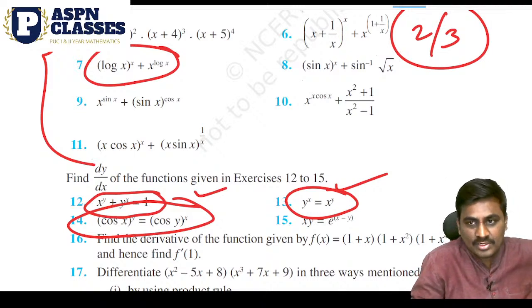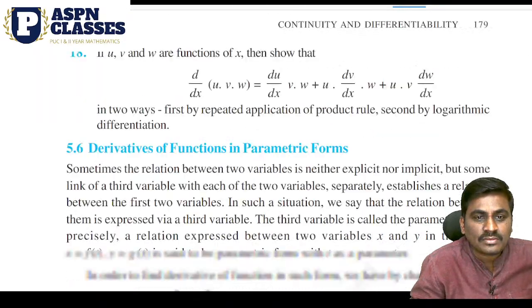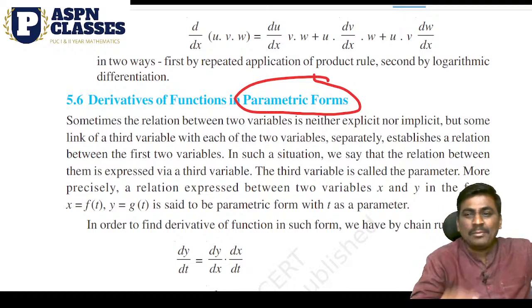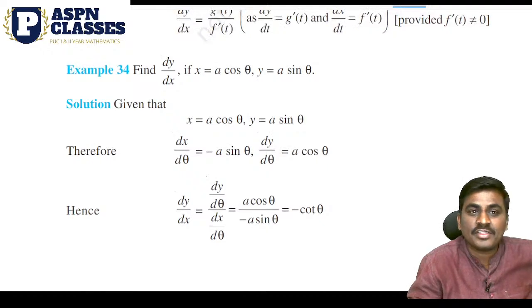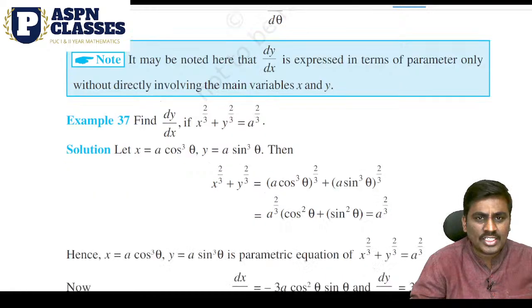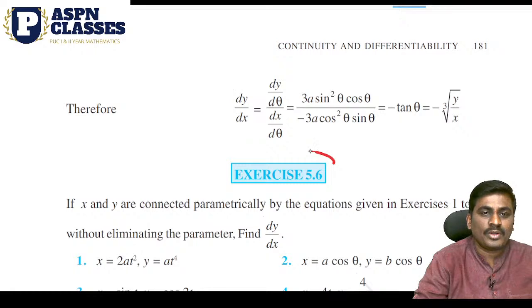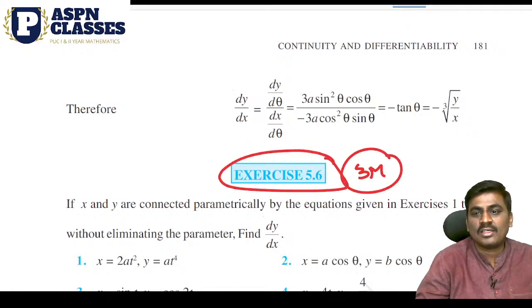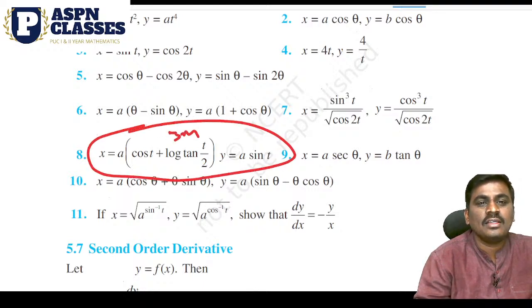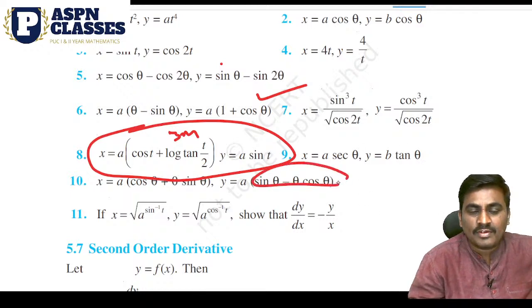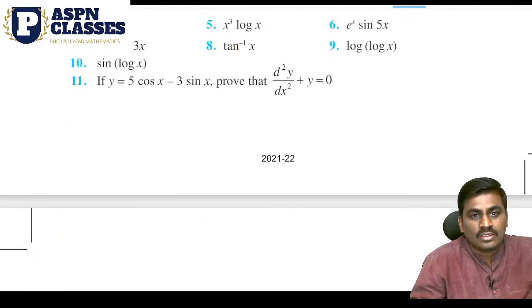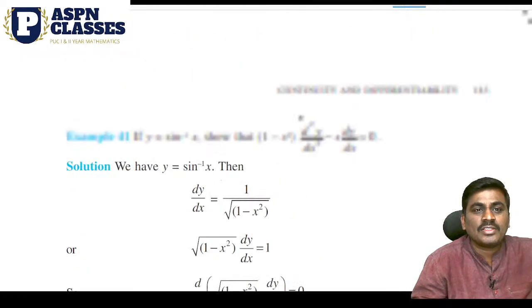Next, the derivative of a function in parametric form — the parametric section has a fixed question. But in the model question paper, along with inverse trigonometry differentiation, these are fixed topics. These are easy questions carrying 3 marks. In logarithmic differentiation, there is a completely fixed exercise — five-point fix — carrying 3 marks.